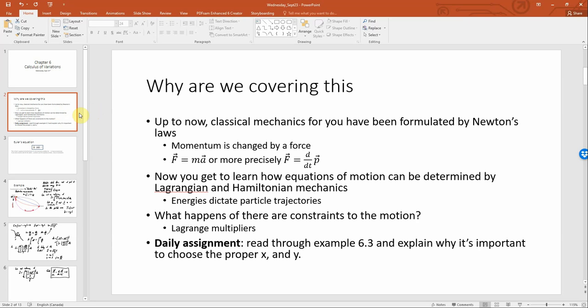We'll be continuing with Monday's lecture, going through some examples, and we'll talk about Lagrange multipliers—what happens if there are constraints to the motion. Before we talked about a particle going in a straight line; what if it can't go in a straight line? What if it's on the surface of a sphere? Then we deal with Lagrange multipliers, which allow us to handle these constraints. The daily assignment due Friday is: read through example 6.3 and explain why it's important to choose the proper x and y.